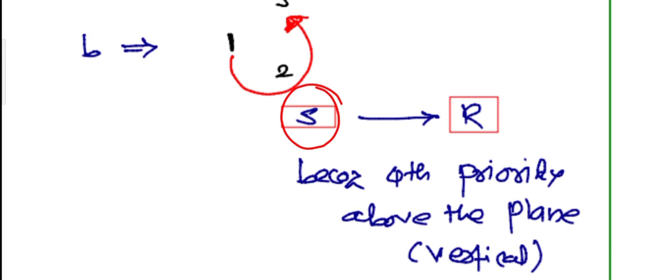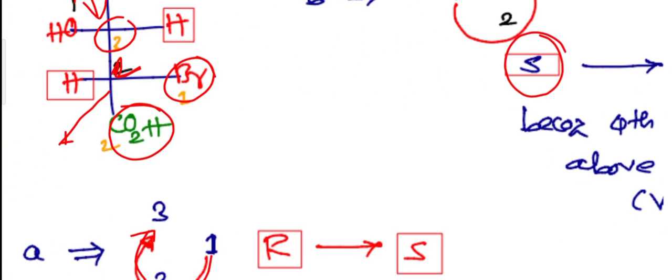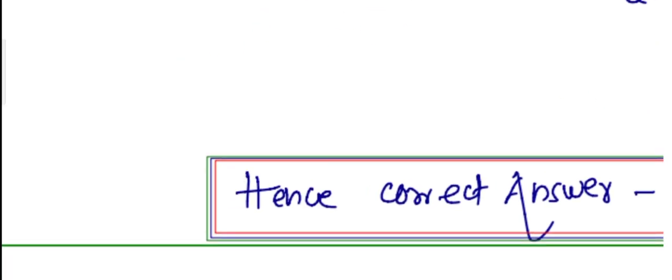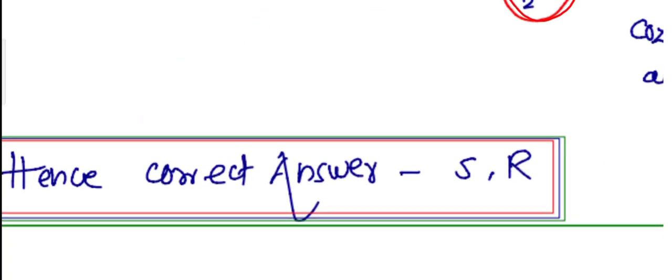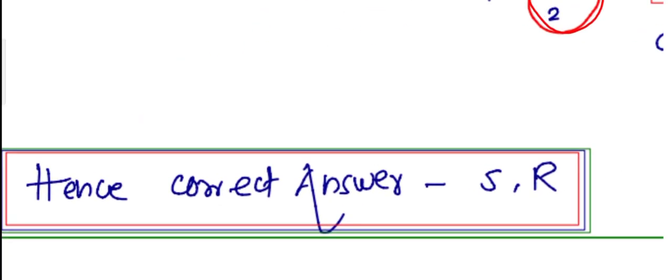That's why the second chiral center will be R. So based on that, the answer to this question is S,R. In this way one can predict this type of question. It's a very simple way - just we have to consider the reverse rule and assign the priorities. Thank you for watching.